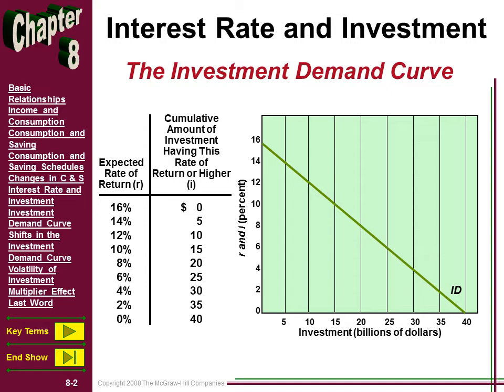The higher the interest rate, the lower the amount of investment dollars spent on new projects per year. For instance, at a high interest rate of 12%, it's going to be difficult to find new business ventures that are going to have an expected rate of return of 12% or better. Therefore, the cumulative amount of investment that takes place would only be $10 billion for that year. At a much lower rate of, say, 4%, there's a much greater amount of gross business investment — say, $30 billion.